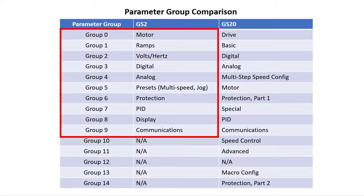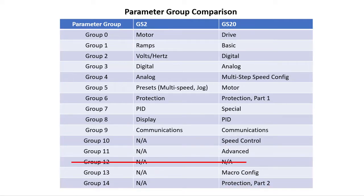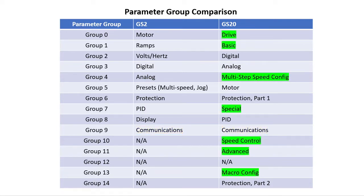The GS2 has 10 parameter groups. The GS20 has 14 groups. Neither drive family uses group 12. While they have a number of common groups like motor, digital, analog, PID and communications, the GS20 rearranges those and has additional groups to make it easier to find parameters.